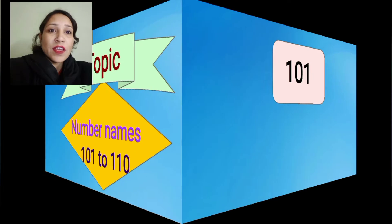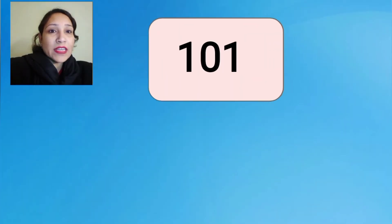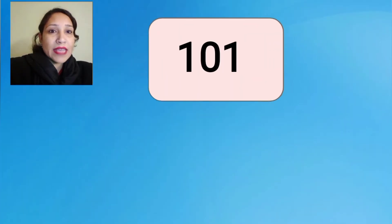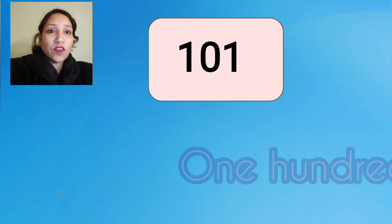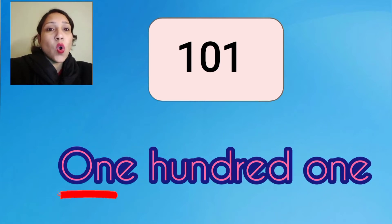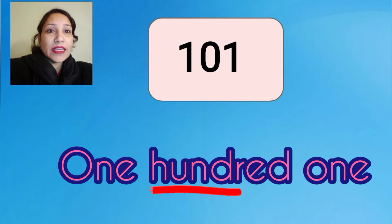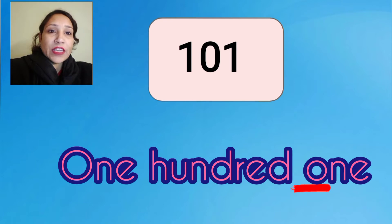The first number is 101. We read this number as one hundred one. The spelling of 101 is O-N-E, one; H-U-N-D-R-E-D, hundred; O-N-E, one. 101: one hundred one.